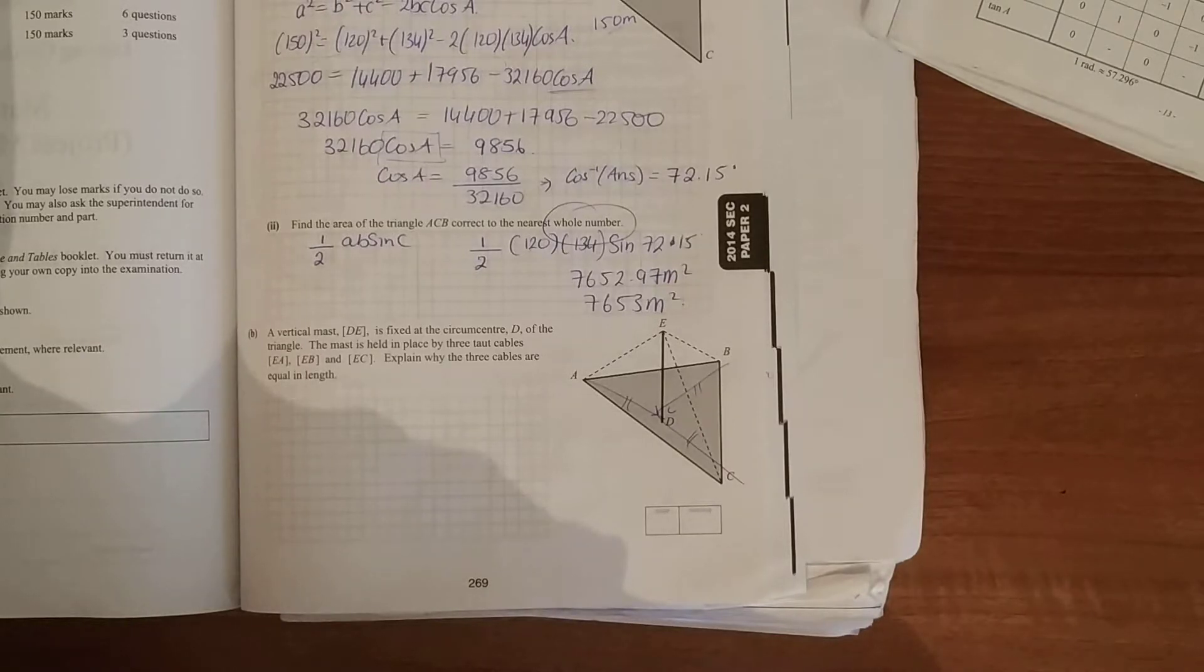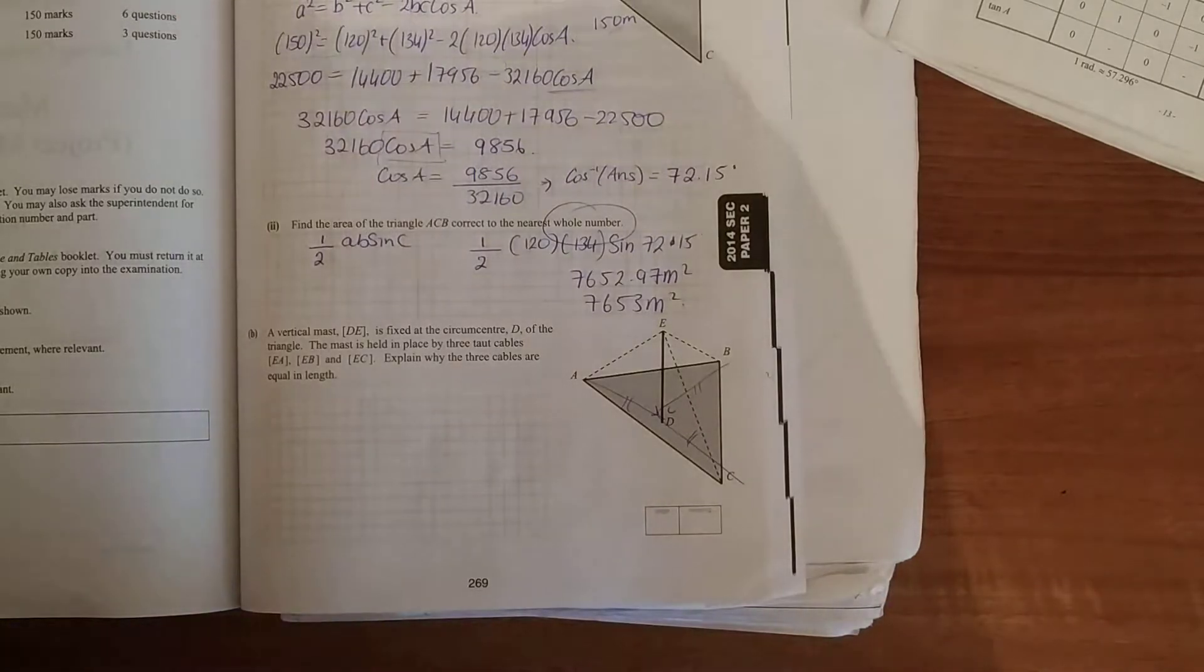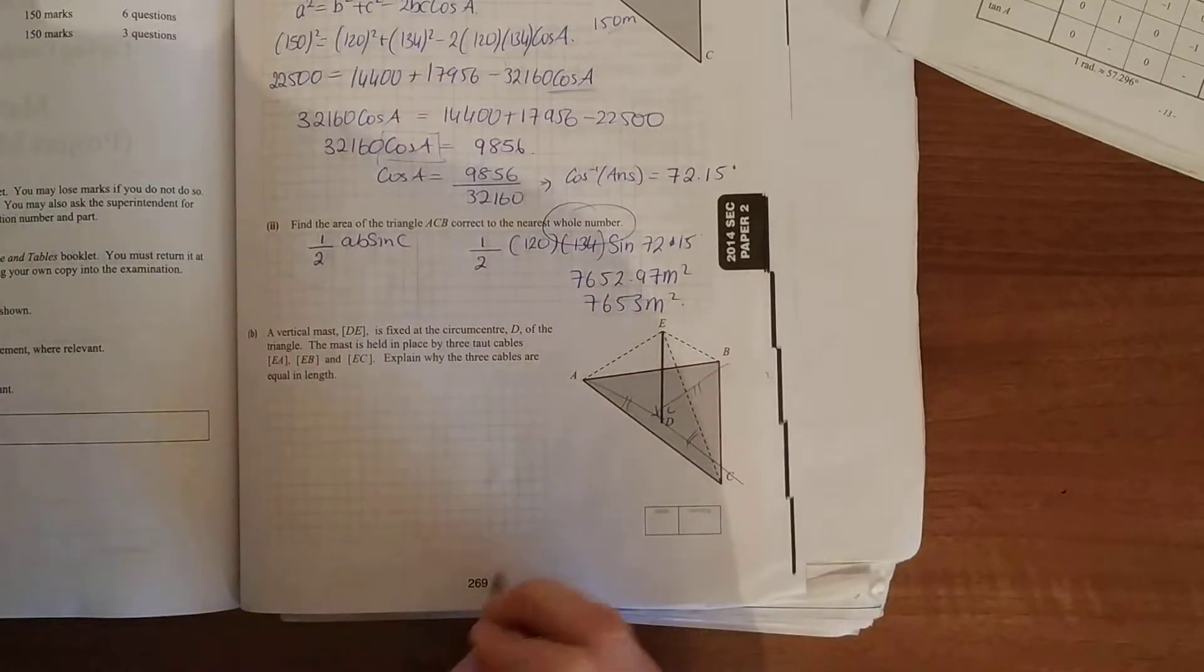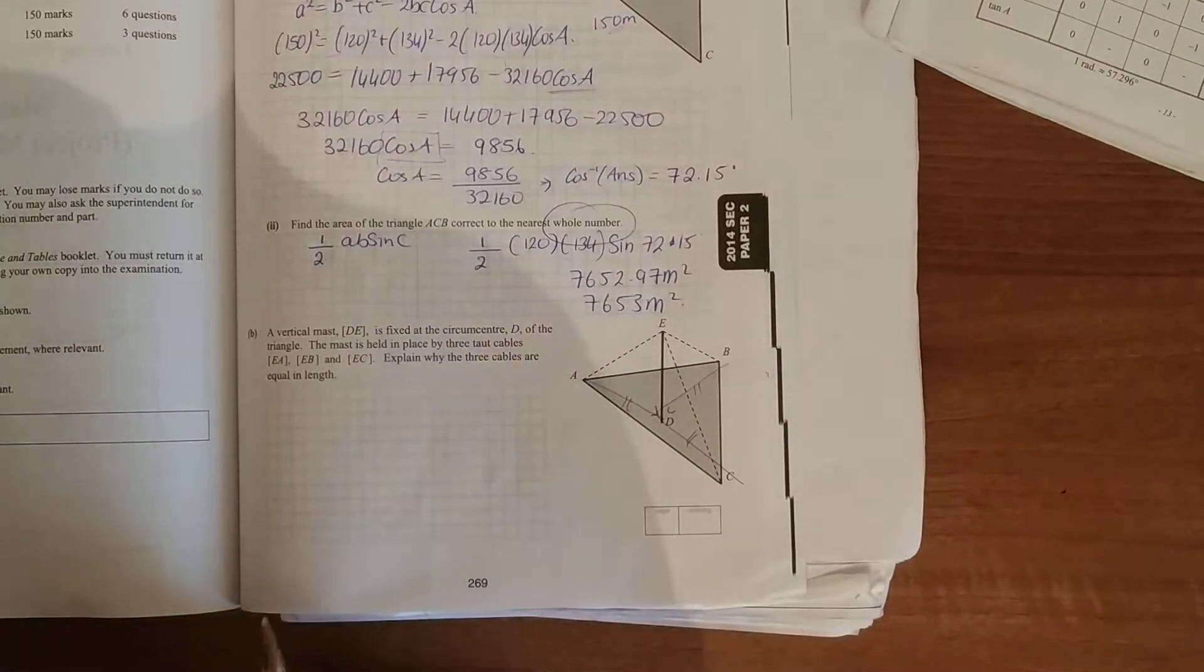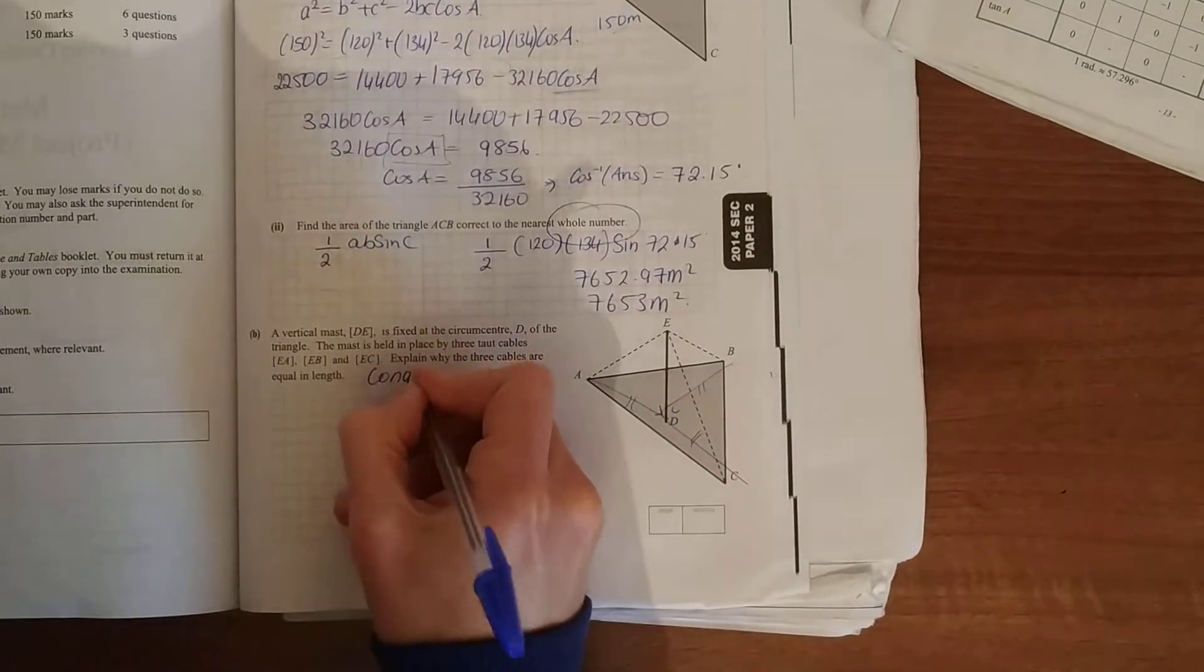Explain why the 3 cables are equal in length. That's just asking you why is EA same as EB same as EC. So you must be thinking, since they're the same, not just similar, you must be thinking about congruent triangles.